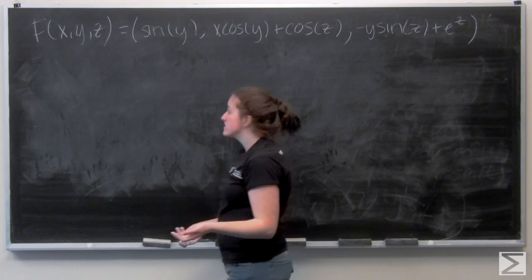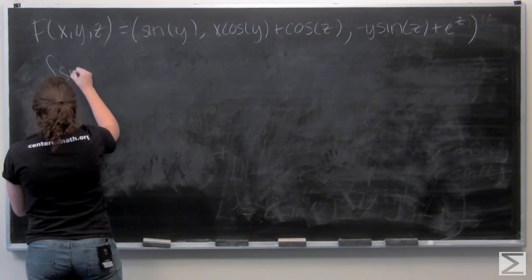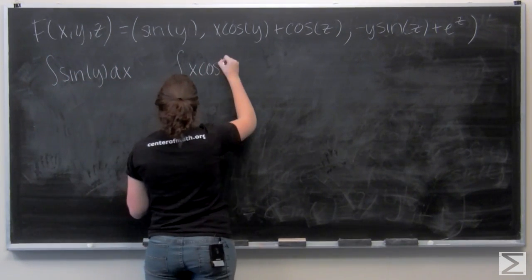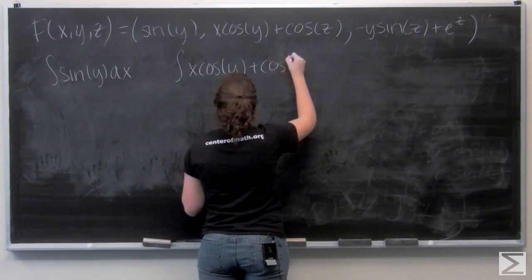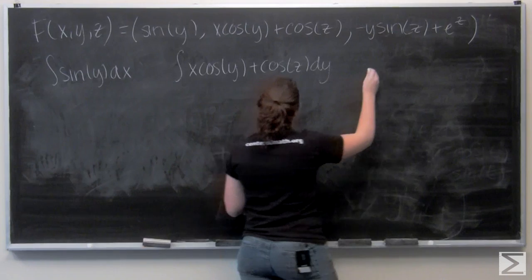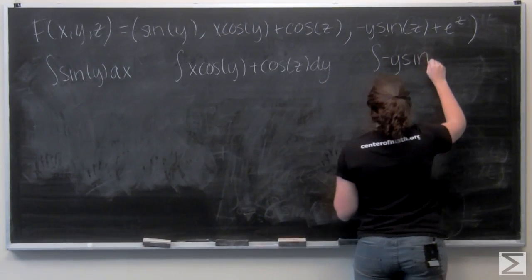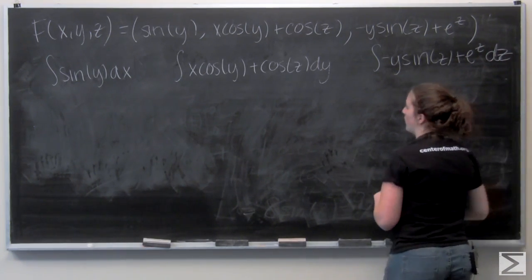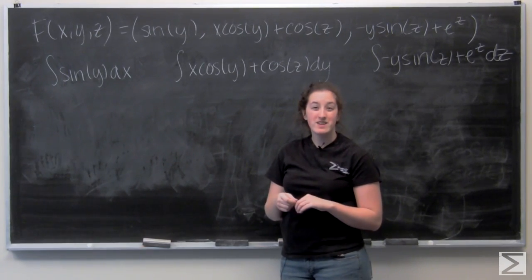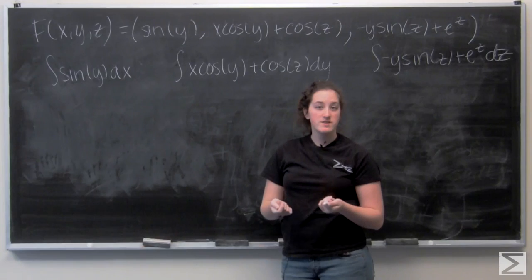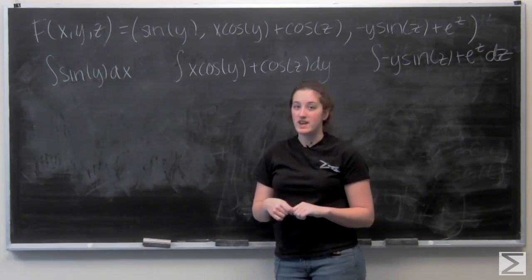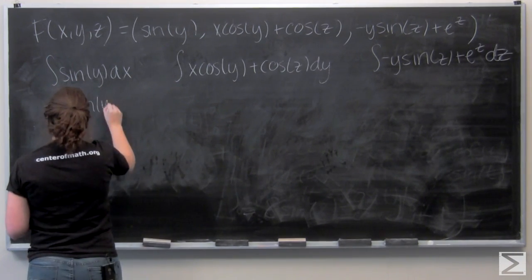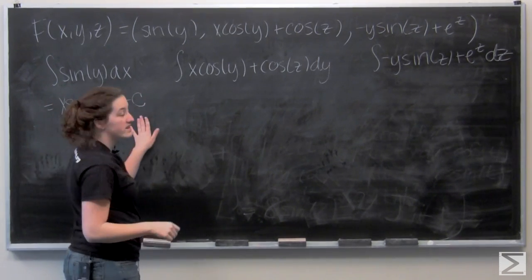Let me write out all three integrals. Starting with the first one: the integral of sine of y with respect to x. Sine y is going to be treated like a constant, so when I integrate I'm going to get x sine y plus c, where c is just any real number.